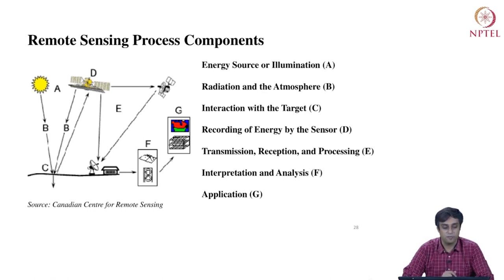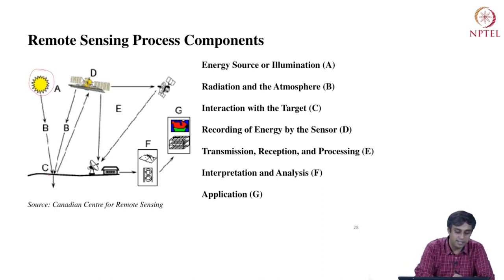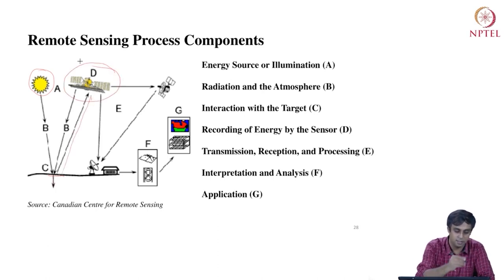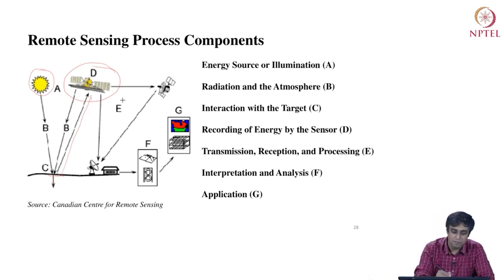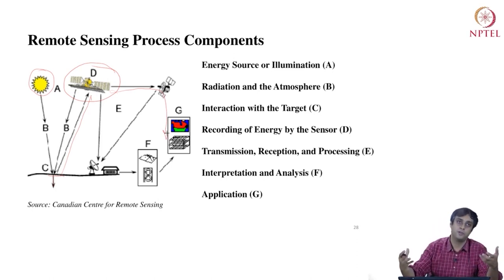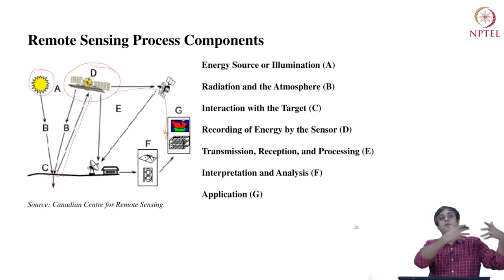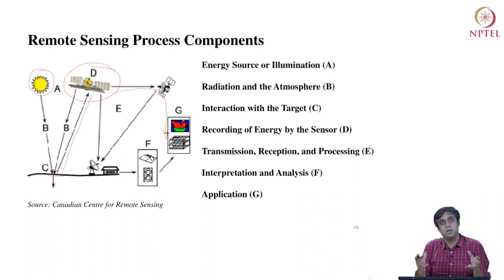To understand the remote sensing process components: there is a source of light that hits the target — the earth's surface. Some of the energy is absorbed and some is reflected back to the satellite sensor roaming in space. The sensor collects this information in terms of energy received after reflection from the earth's surface, which is finally received by a system on earth where it is processed, analyzed, manipulated, and stored. The imagery we saw at the beginning of this course really went through all this process — all this technology goes into getting that data to us.